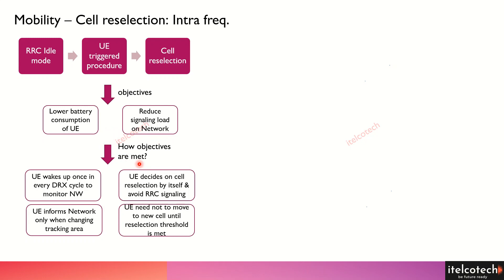How it works: there is a discontinuous reception cycle which is embedded in the network, and the UE need not continuously send or receive signaling. It will just wake up whenever a DRX cycle comes into the picture.